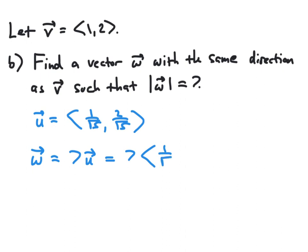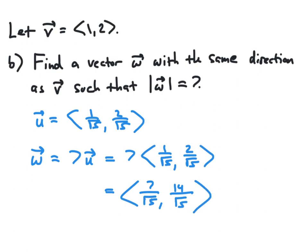To do this, we take each component of our unit vector u and scale them by 7, obtaining the vector with components 7 over square root of 5 and 14 over square root of 5. This vector will have a magnitude of 7. By taking a unit vector and scaling it by 7, the result automatically has a magnitude of 7. And because u had the same direction as v, w will also have the same direction as v.